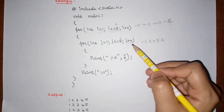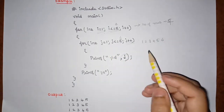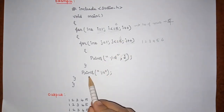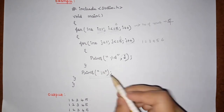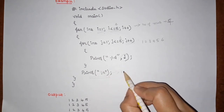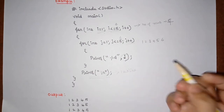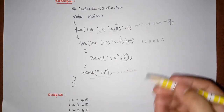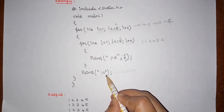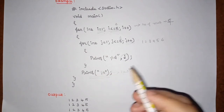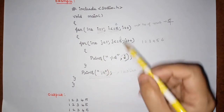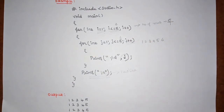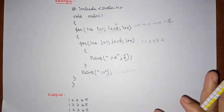The outer for loop represents rows — how many times we want to print the inner for loop's output. For the outer for loop there is one additional print statement containing only '\n', which represents a new line. This is used to print each sequence on a new line. This print statement belongs to the outer for loop, and now we will see how the loop execution happens.